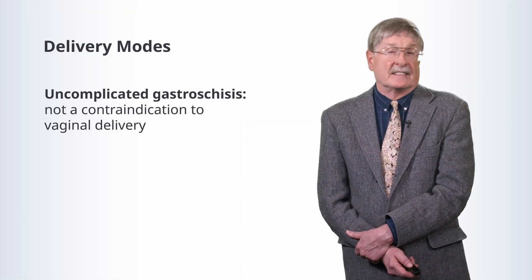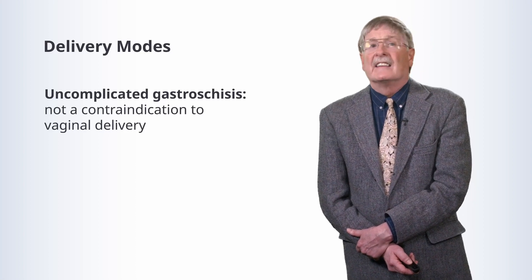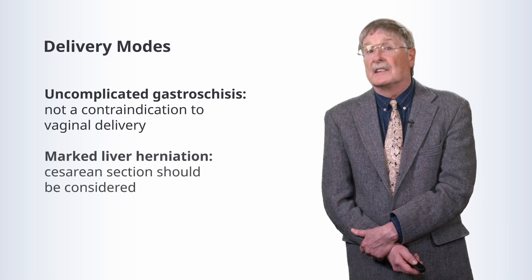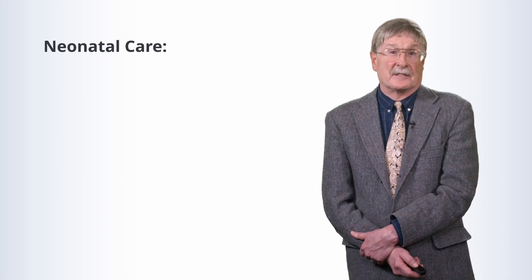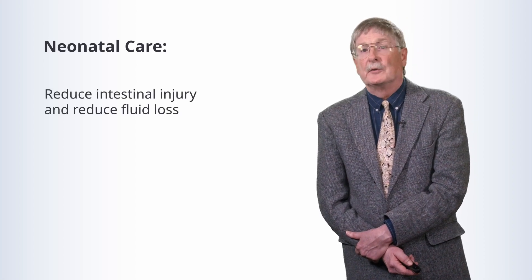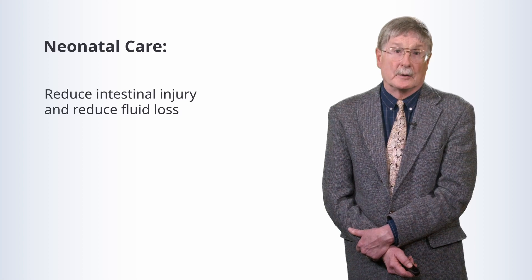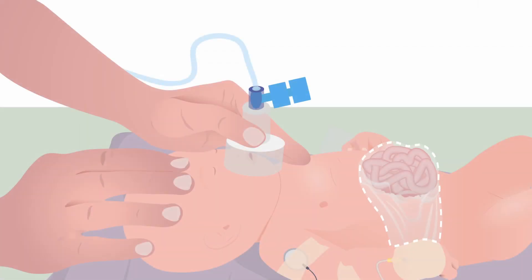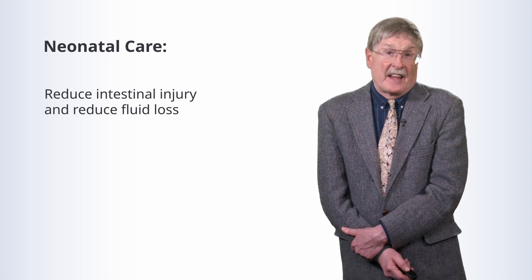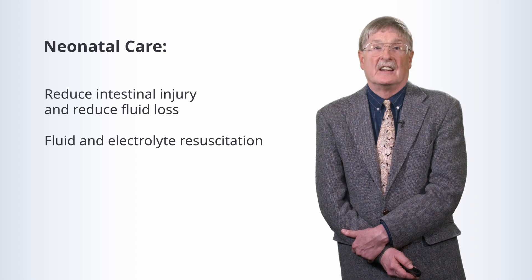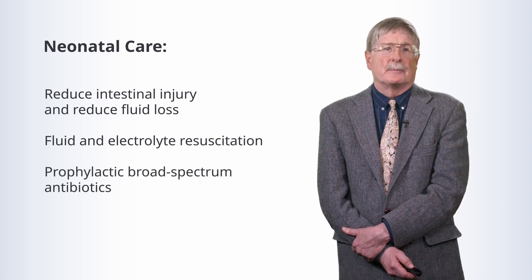For uncomplicated gastroschisis — where nothing else is herniated besides a few loops of bowel — that is not a contraindication to vaginal delivery. But if there is liver herniation, babies should be delivered by cesarean. They go into neonatal intensive care, where we reduce intestinal injury and fluid loss by wrapping the exposed bowel with sterile saline dressings covered with plastic wrap. In some centers, the entire lower half of the neonate is lowered into a plastic bag to protect lower bowel perfusion. We perform fluid and electrolyte resuscitation and give prophylactic broad-spectrum antibiotics to limit infection.